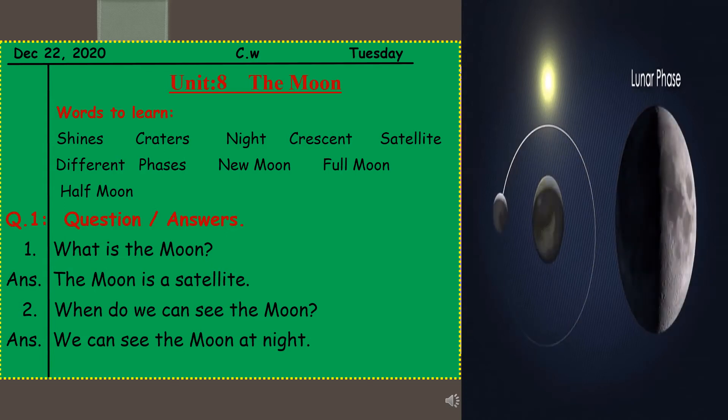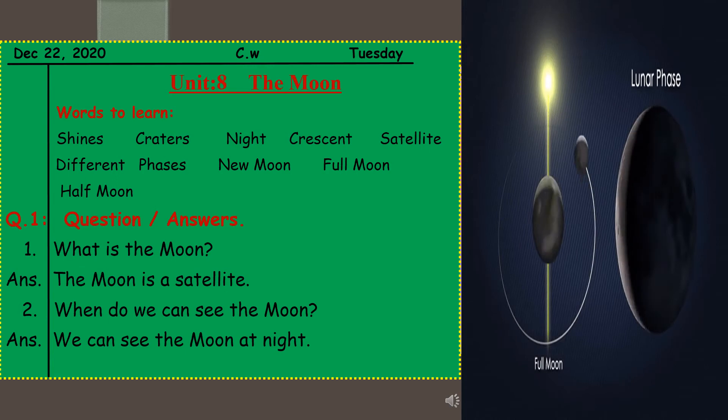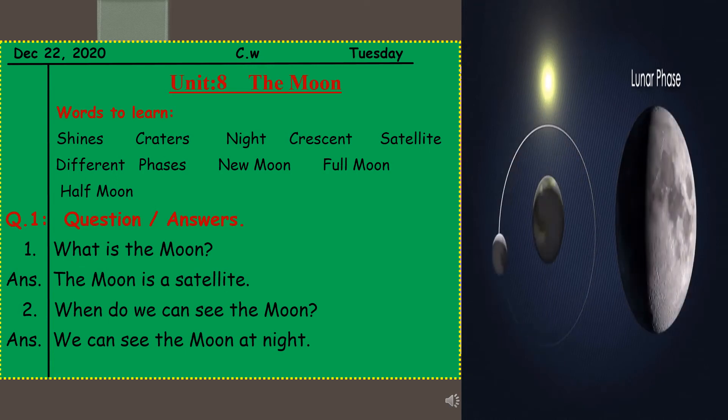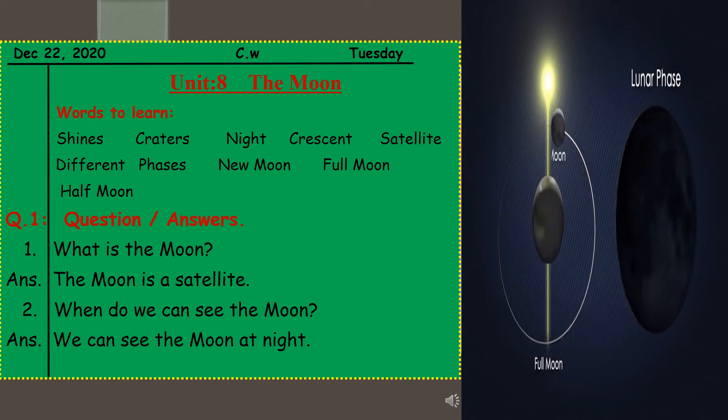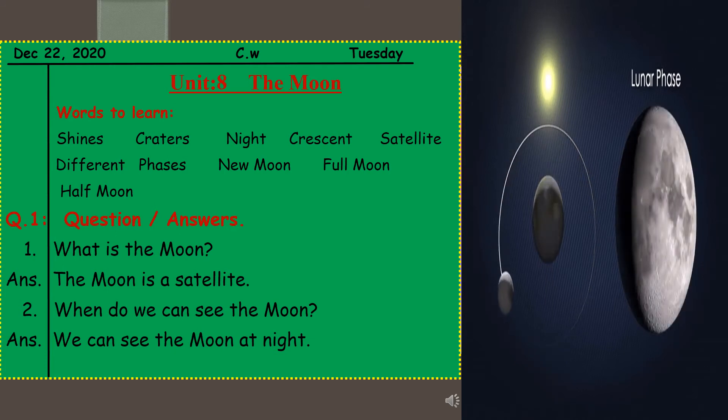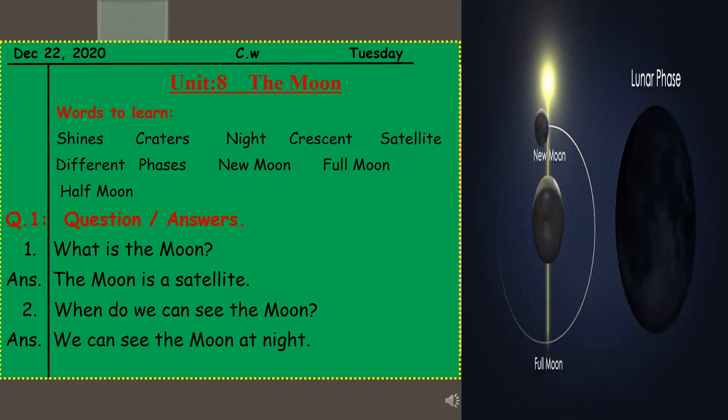Next word is different. You can see different phases, so it is different. D-I-F-F-E-R-E-N-T, different. Phases, P-H-A-S-E-S, phases.